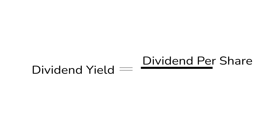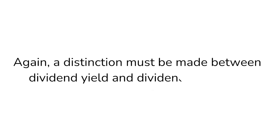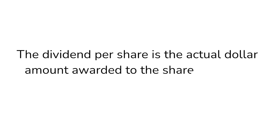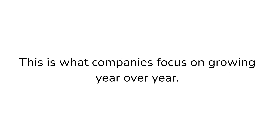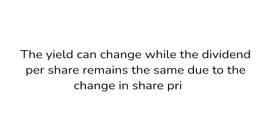The second metric we're going to look at is dividend yield. This is simply the dividend per share divided by the share price at the time. The yield can be highly variable since the stock price will likely fluctuate with the market. The dividend per share is the actual dollar amount awarded to the shareholder for owning one share of a particular stock. This is what companies focus on growing year over year. The yield can change while the dividend per share remains the same due to the change in share price.